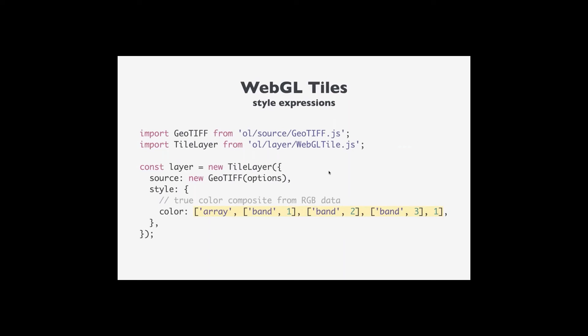If you have a four-band or higher GeoTIFF, you can choose which bands go in which channels. For example, band one in the red channel, band two in the green channel, band three in the blue channel, with an alpha of one. If the fourth channel is near infrared, you might display near infrared in the red channel, visible red in the green channel, and visible green in the blue channel.